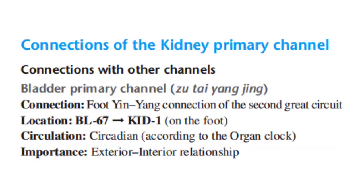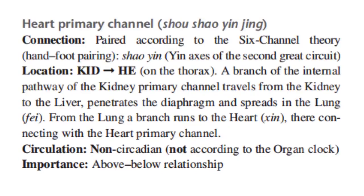Now let's discuss the connections of the kidney primary channel. First, its connection with the bladder primary channel. It is the connection of the foot yin-yang of the second great circuit, located between bladder 67 and kidney 1 on the foot. It follows the circadian cycle according to the organ clock. Its importance is the exterior-interior relationship between the kidney and the bladder.